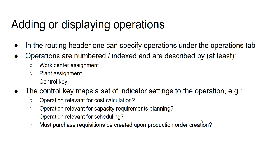The last thing I want to discuss is adding and displaying operations. In the routing header there is a tab called Operations. Clicking that tab allows you to adjust operations, the sequence of operations, or create and add additional operations. Operations have a number as an index, and you will need at least an assignment to a work center, a plant assignment, and a control key. This information is added row-wise in a table.